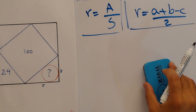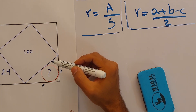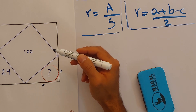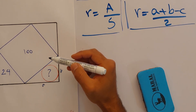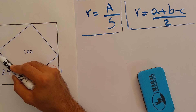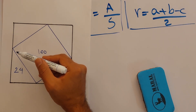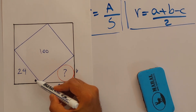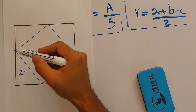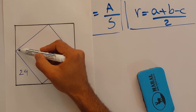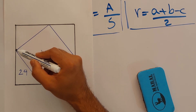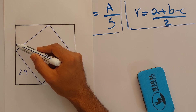First, we need to prove that the four right triangles formed are congruent. Let's name one angle alpha and the adjacent angle beta, so alpha + beta = 90°. Based on the straight line having 180°, and with the right angle being 90°, the remaining two angles must also sum to 90°. So if one is alpha, the other must be beta.